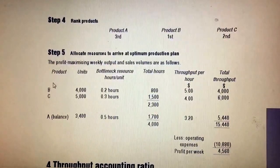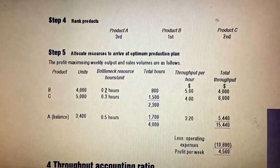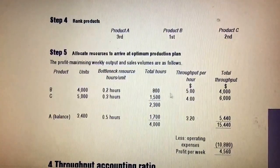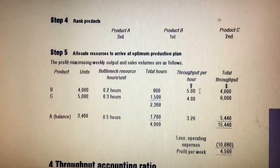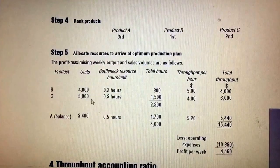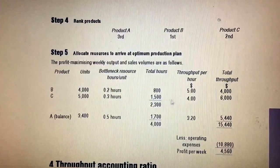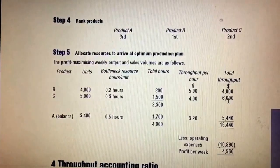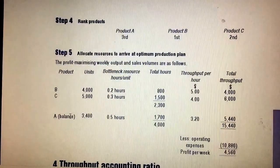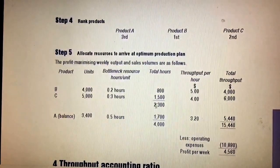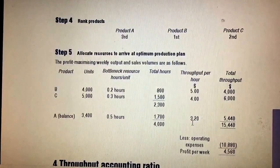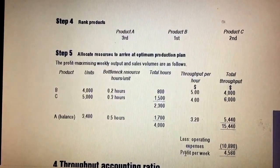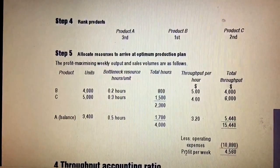Product B is your top priority — produce all 4,000 units of demand. Allocate 0.2 hours per unit and calculate the total hours spent; throughput per hour is $5. For Product C, that uses 1,500 hours; throughput per hour is $4, giving you $6,000. The remaining hours are 1,700; throughput per hour is $3.2, giving you the remaining throughput. Add them all up, then deduct operating expenses to get profit per week.